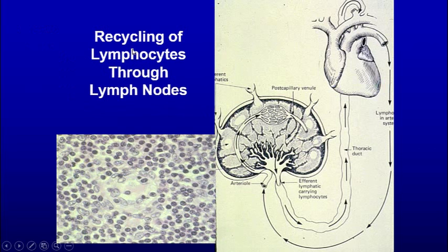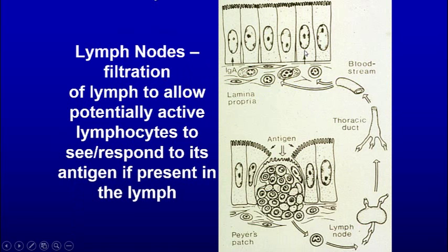There is recycling — blood comes in, cells come out through the post-capillary venules, migrate through, go through the thoracic duct via the efferent lymphatic, back into the bloodstream, then come out in another lymph node at a different location. This recycling allows lymphocytes to find the area where the antigen is. So if you cut your foot, eventually the cells that respond to bacteria the foot is exposed to will find their way to that location, even if they go through other lymph nodes first.